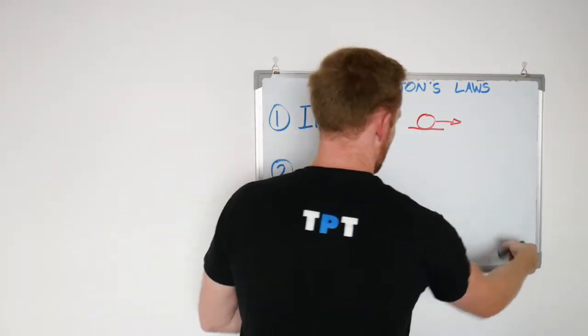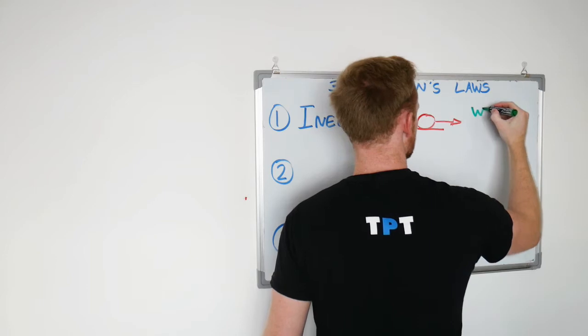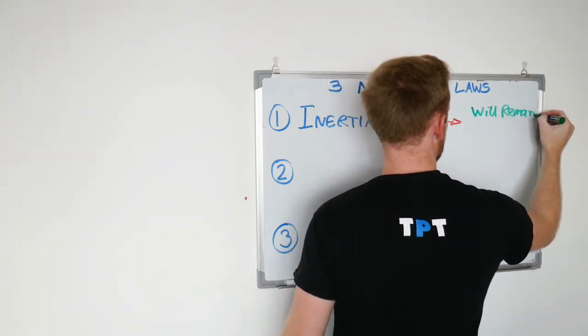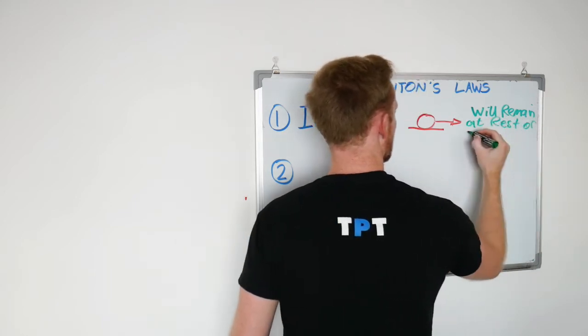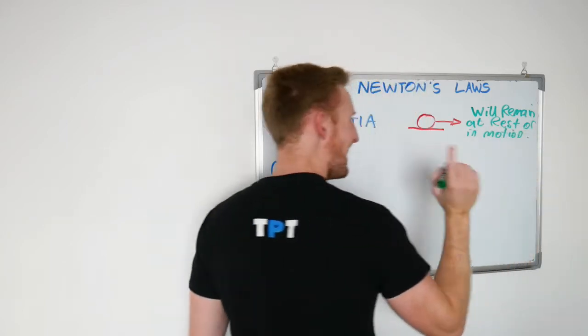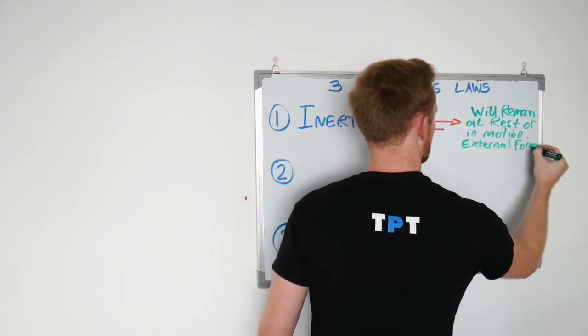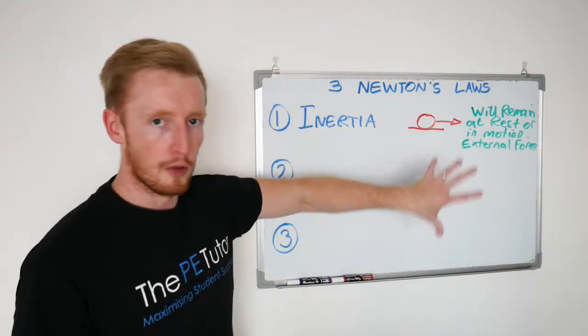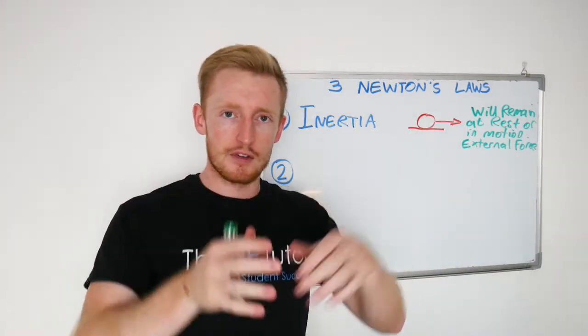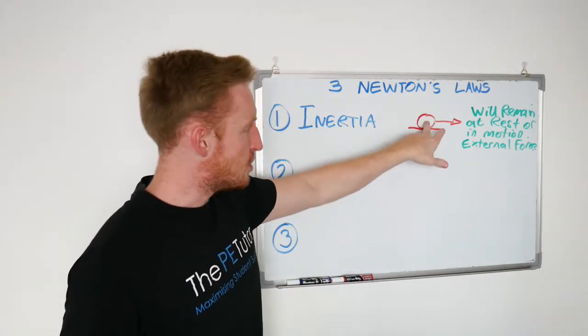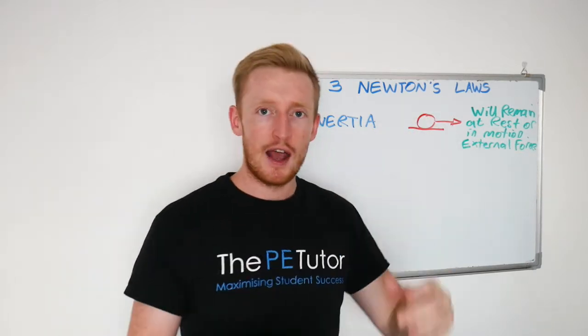So if we were to write down some key words for the definition of it, the law of inertia states that a body will remain either at rest or in motion unless an external force acts upon it. So the ball, the body, the object, the performer, whatever it is in that sporting context or life for that matter, but we're focusing on sports here, that object will remain at rest or in its constant state of motion unless an external force acts upon it.